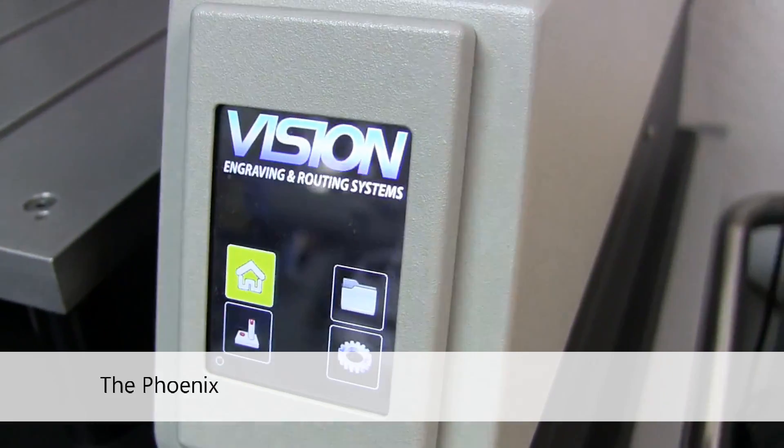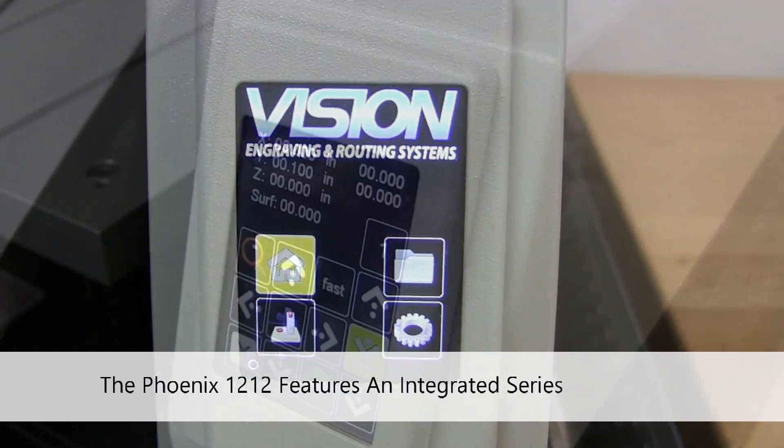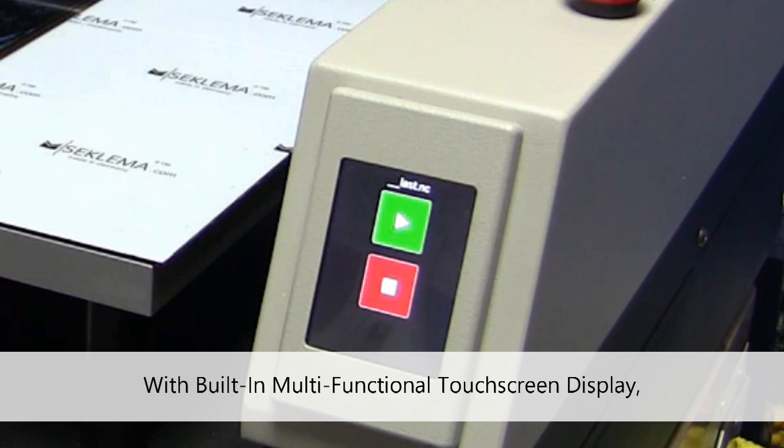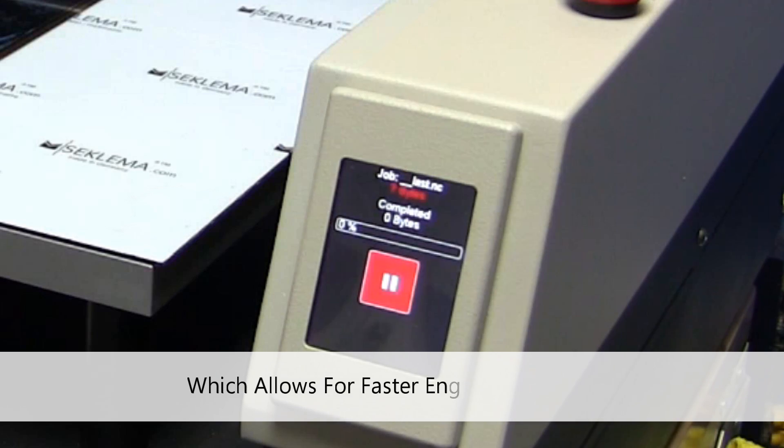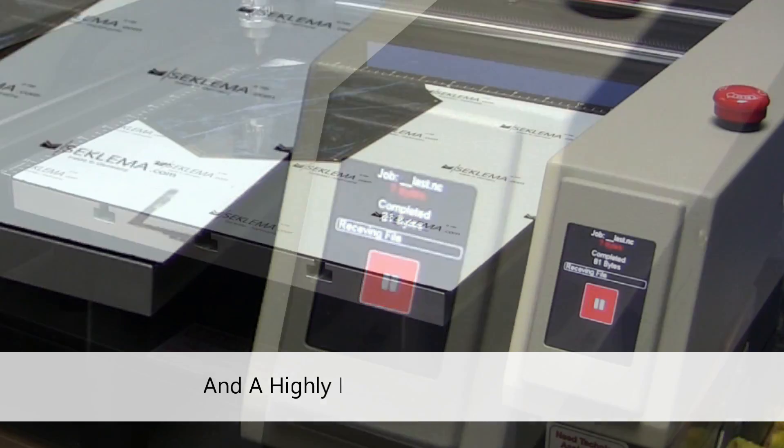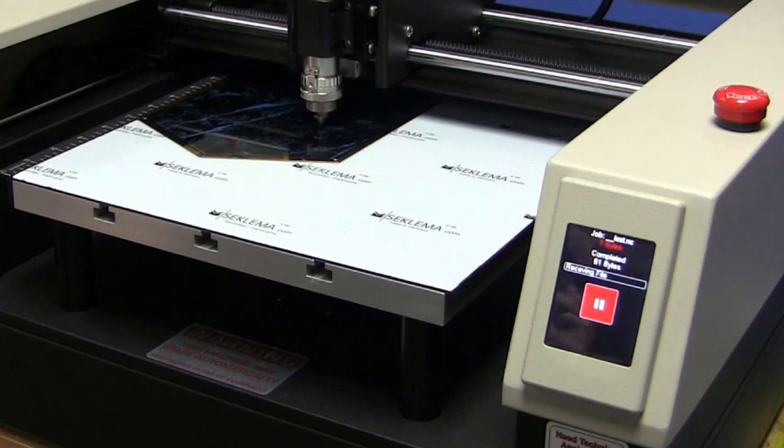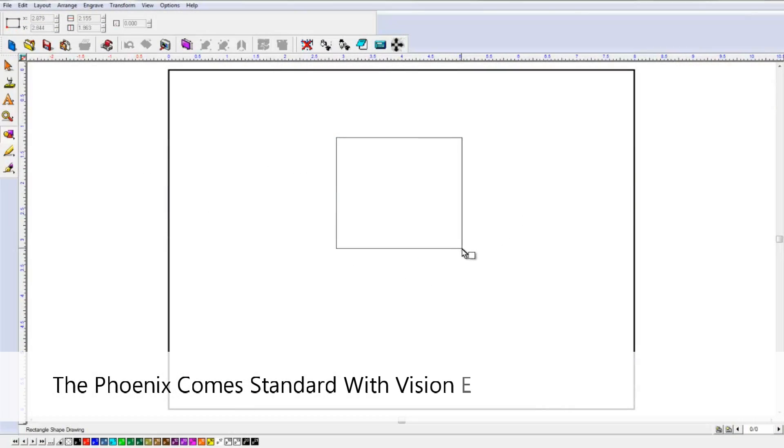The Phoenix 1212 features an integrated Series 5 controller and Vision's advanced V-Touch technology with a built-in multifunctional touchscreen display, which allows for faster engraving speeds and a highly intuitive user experience. The Phoenix comes standard with Vision Express engraving software.